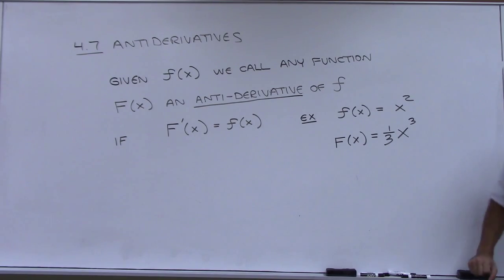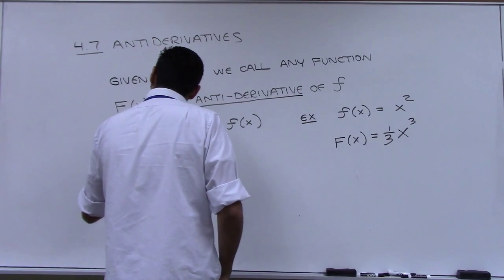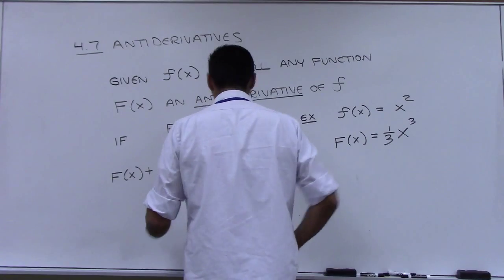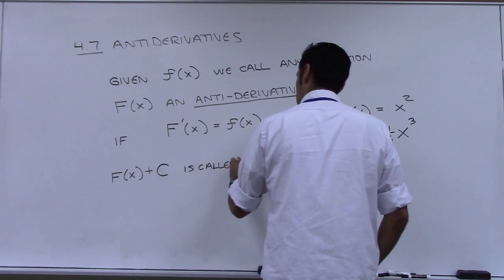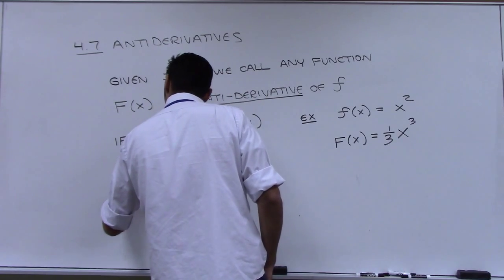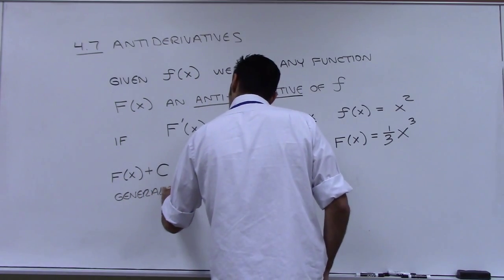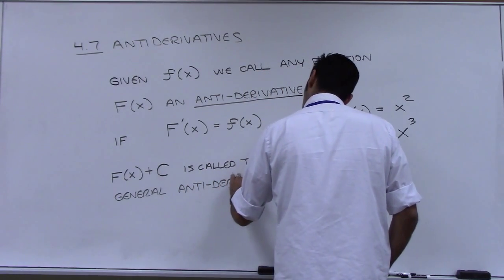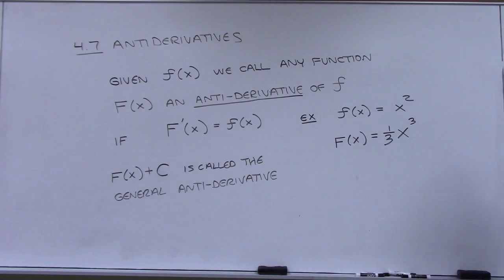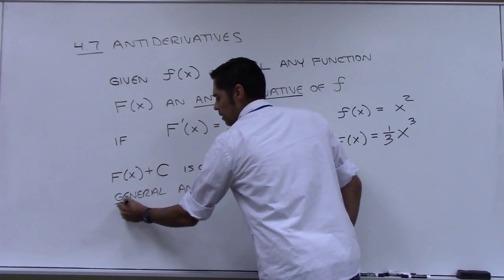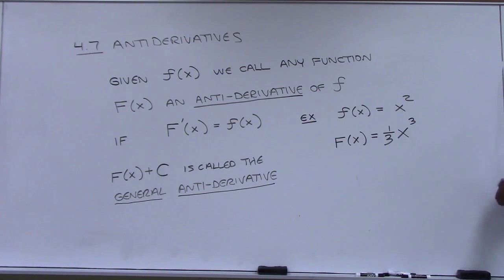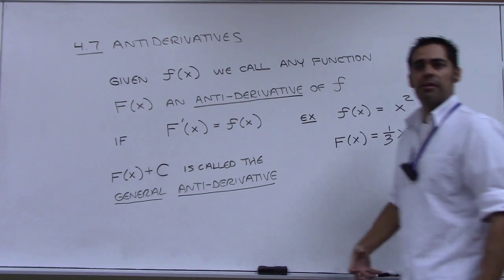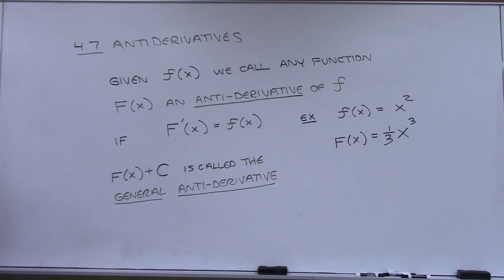Capital F(x) plus C — capital C — is called the general anti-derivative. Even though we know there is an infinite number of functions that would qualify, if we just write this plus C, that covers all of them. So that is the general anti-derivative. That's just some language.